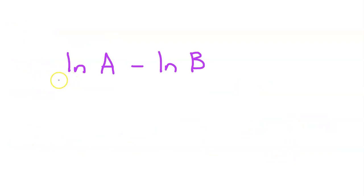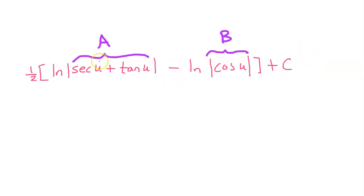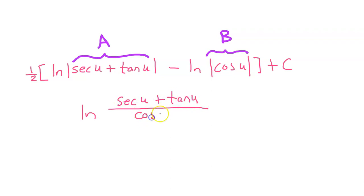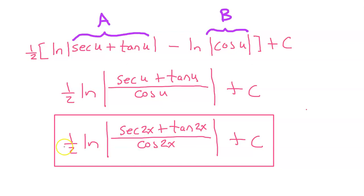There is another form of the answer that will probably show up on a multiple choice question, so I need to remind you of a property of logarithms: natural log a minus natural log b is equal to natural log a over b. So natural log a minus natural log b is the same as natural log of a over b. So I'm going to put secant u plus tangent u over cosine u, and just put the whole thing inside of the absolute value. Don't forget about the 1 half that's out in the front, or the plus c. Replacing u with 2x, this is the answer you are more likely to see on a multiple choice question.